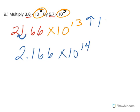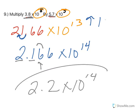If you're talking significant figures, 3.8 has 2, 5.7 has 2, so I want this to have 2. I look at 6, 6 rounds up, and I'm going to end up with 2.2 times 10 to the 14th.